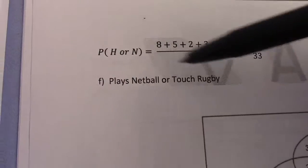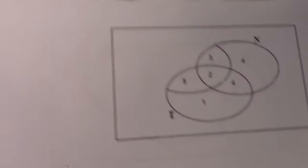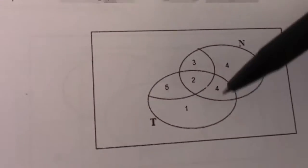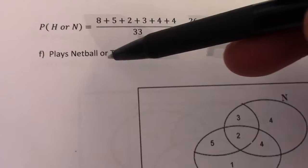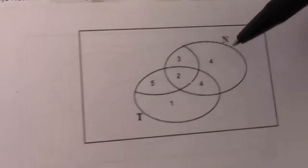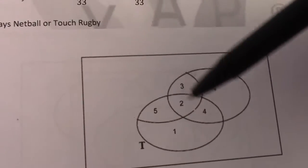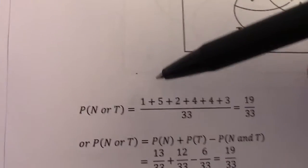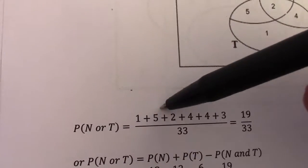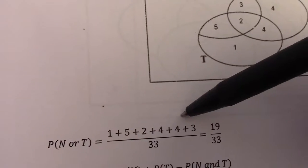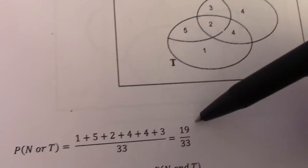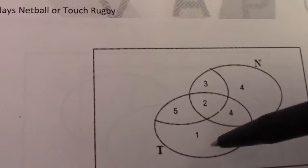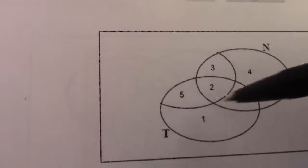Now netball or touch rugby — I add everything in circle N and everything in circle T. So 1 plus 5 plus 2 plus 4 plus 4 plus 4 plus 3 gives me 19 over 33.